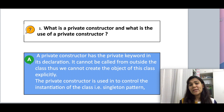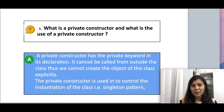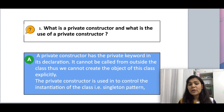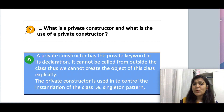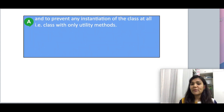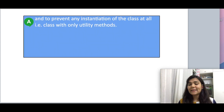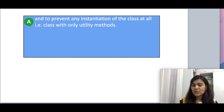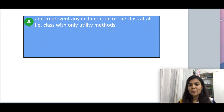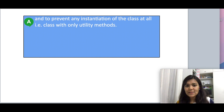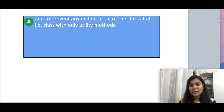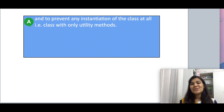Now let's see the use cases of making a constructor private. First, when you want to control the instantiation of the class — this happens in the singleton pattern where we want to limit the instances of a class to one instance. The second is when we have a class with static methods and static variables where we don't need the instance of the class at all, so we make the constructor private. That means we cannot create any instances and access the static variables and methods using the class name.